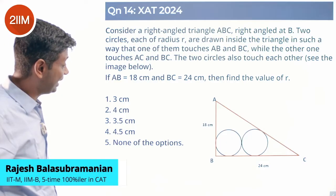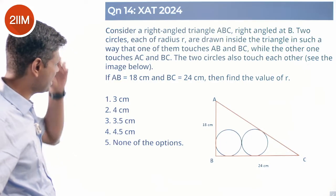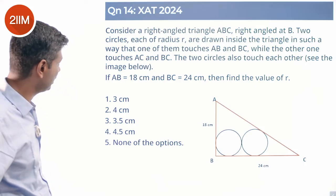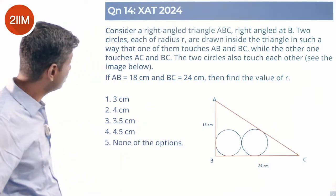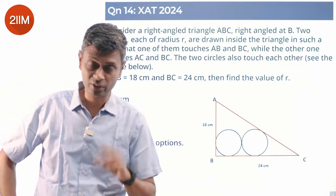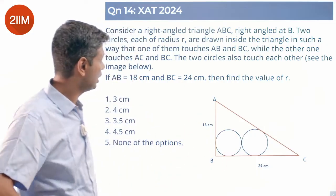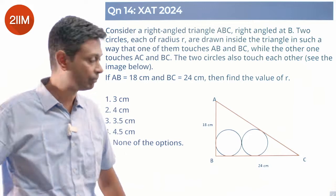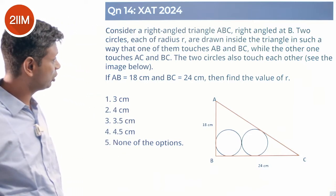Consider right angle triangle ABC, right angle at B. Two circles, each of radius R, are drawn inside the triangle such that one of them touches AB and BC while the other one touches AC and BC. The two circles also touch each other. Both have radius R. AB is 18, BC is 24. Find R.